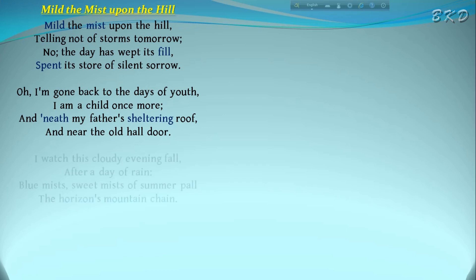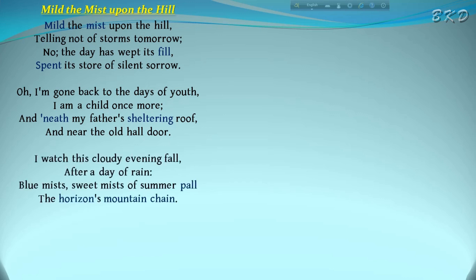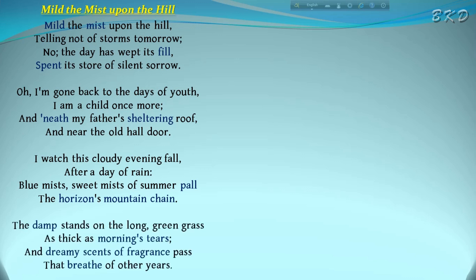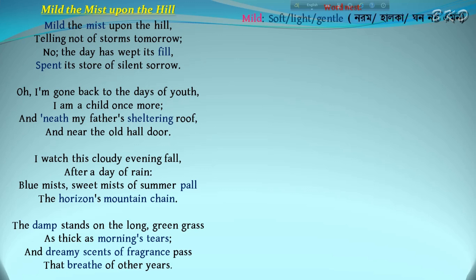The poet saw a thin layer of mist covering the hill. The mist doesn't tell her of any storm that may rise tomorrow. It has been a gloomy day, and it has rained all through the day — that is, the day has wept its fill. It does not have any more sorrow to exhibit; it has spent all its sorrow. This suggests there are no more dark clouds in the sky, and hence there will be no more stormy weather.